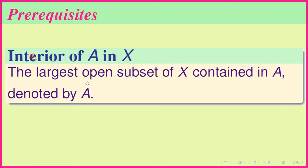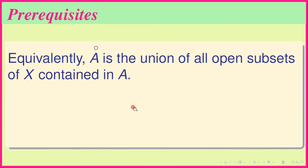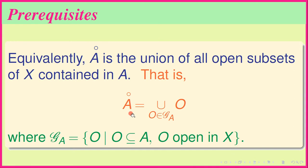The interior of A in X is the largest open subset of X contained in A, denoted by A° (a small circle on top of A). Clearly A equals its interior if and only if A is open in X. Equivalently, A° is the union of all open subsets O of X contained in A.